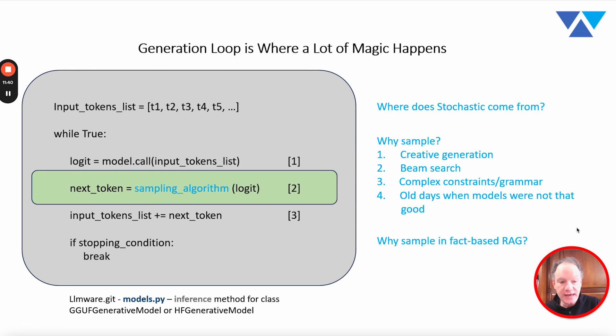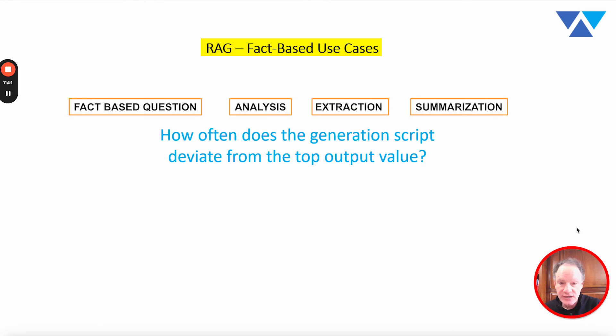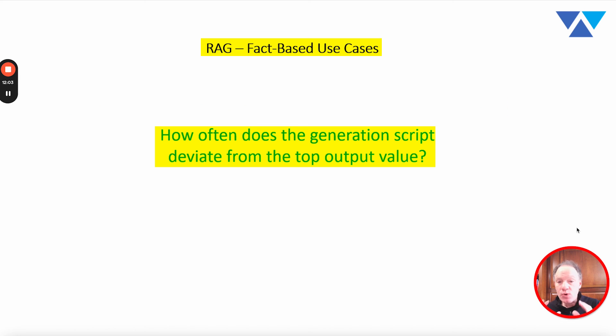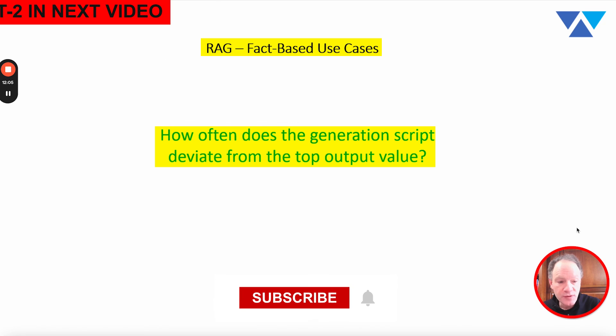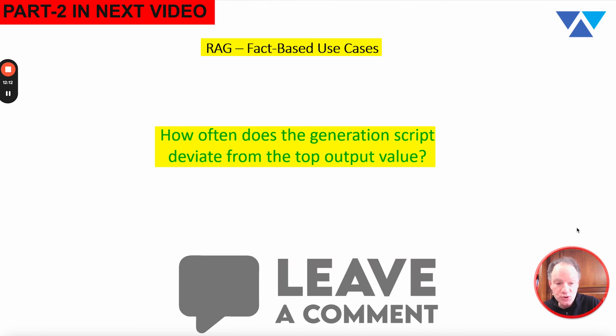And so the question, then, comes in any type of fact-based RAG use case where there's some form of a passage and you want to ask some sort of fact-based question or analysis or extraction or summarization is why are we deviating from the top output value that comes from the model? How often are we doing that? And ultimately, what is the impact from it? So what we're going to do, we're actually going to flip over. I'm going to flip over to my IDE and we're actually going to show you a few experiments that we started to run to start to answer this question.